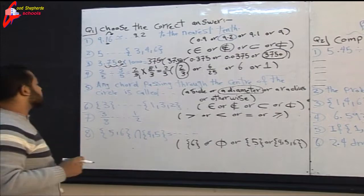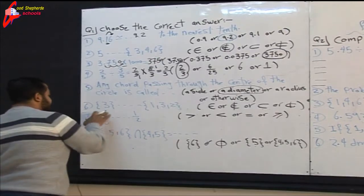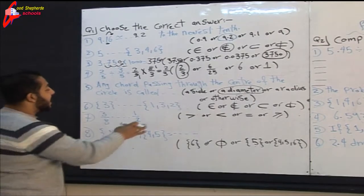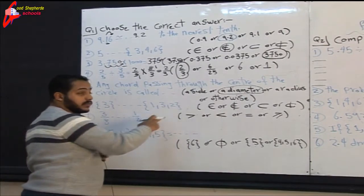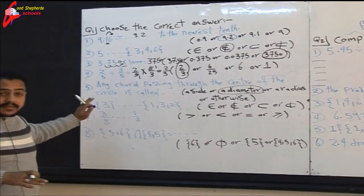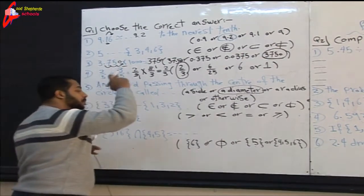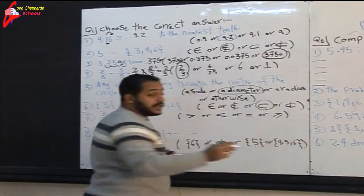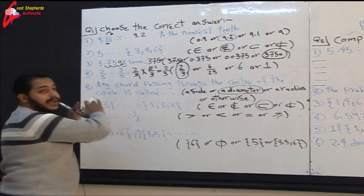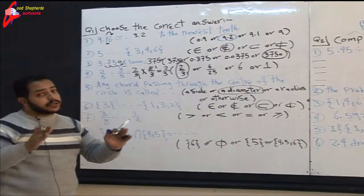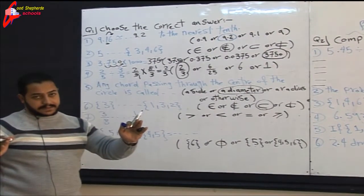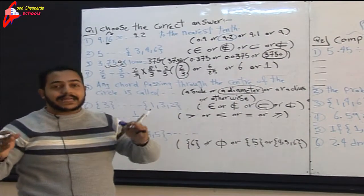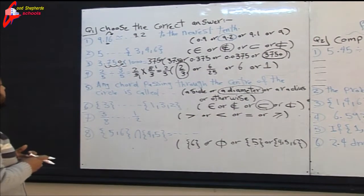Question six: the set {3} — this set has one element, 3. The other set is {1, 3, 2}. The element 3 also belongs to the second set, so we choose subset. Remember: if we have a set compared with another set, we use subset or not subset. If we have an element compared with a set, we use belong or not belong.